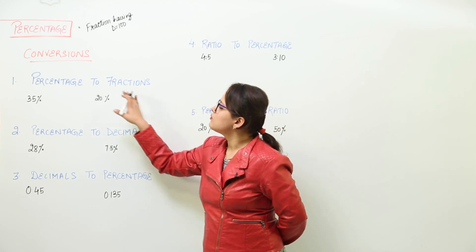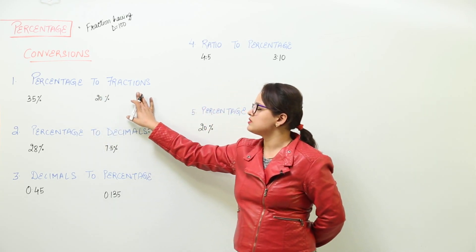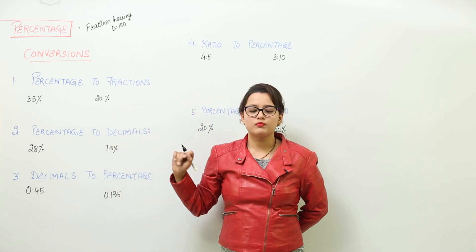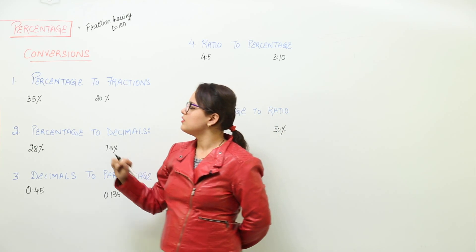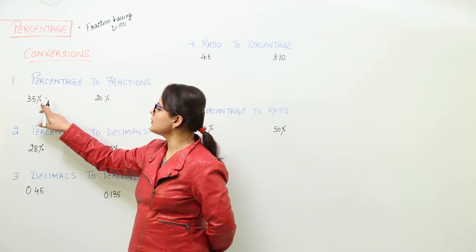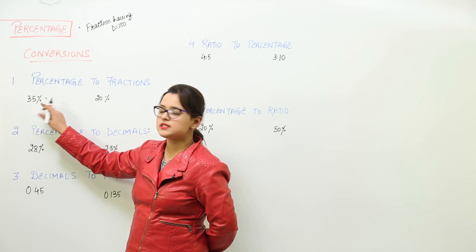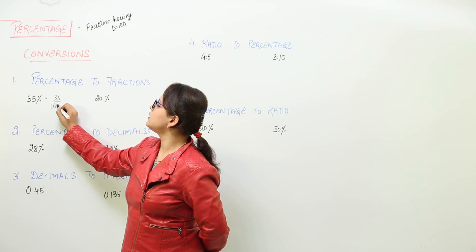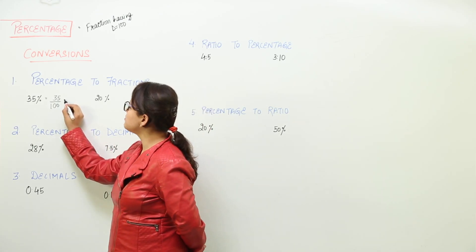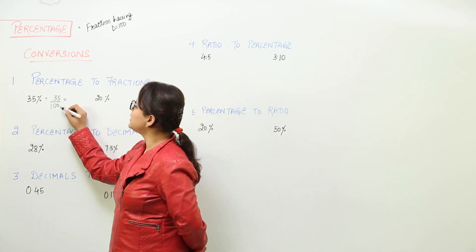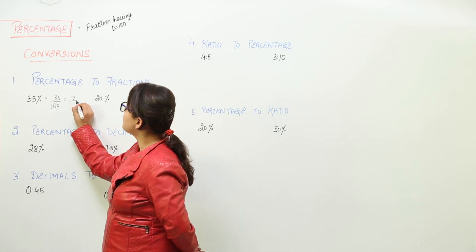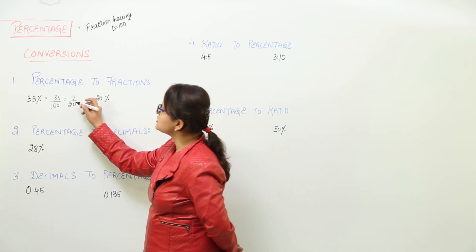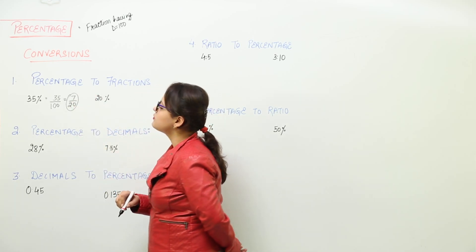First, how to convert percentage to fractions. We have two examples: 35% and 20%. We have to convert them to fractions. It's very simple — we just remove the percentage sign. So we write 35 upon 100, and if you simplify it further by taking common factors, that gives you 7 upon 20. That is the simplest form, and this is the answer for the first conversion.